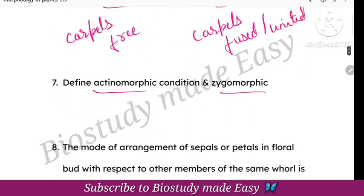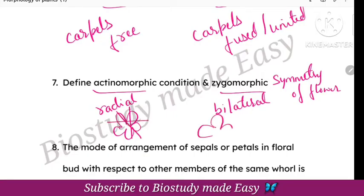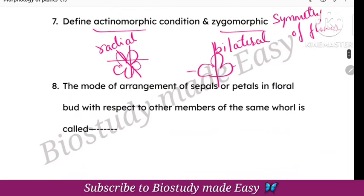Actinomorphic and Zygomorphic conditions are related to the symmetry of the flower. Actinomorphic refers to radial symmetry — when we cut the flower, we get two equal halves in multiple planes. Zygomorphic refers to bilateral symmetry — only one plane gives two equal halves.